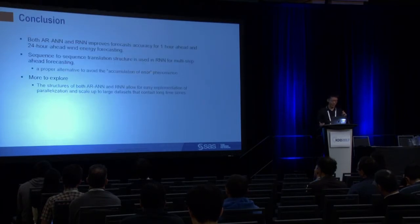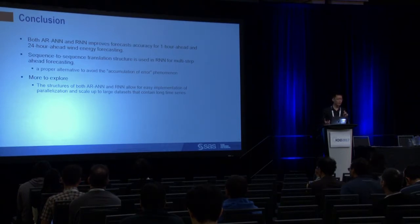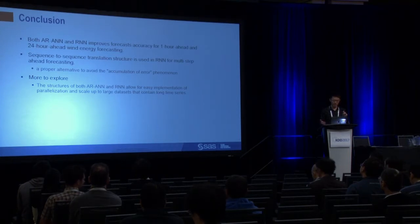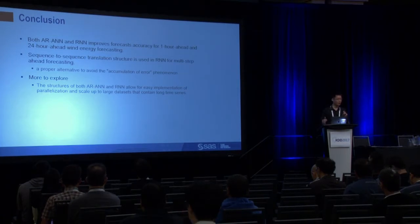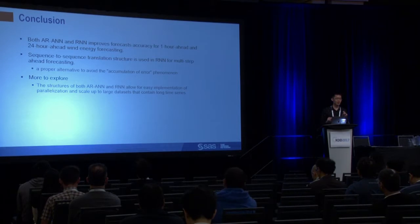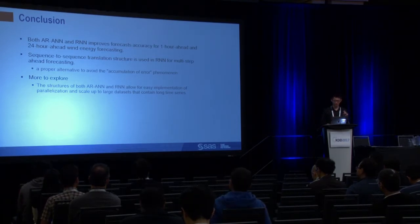The conclusion is that taking temporal dependency into consideration in neural network models is essential for the wind energy forecasting problem. Also, analysis of autocorrelation and partial autocorrelation in the initial residuals is indicative of how long a sequence needs to be incorporated in those models.